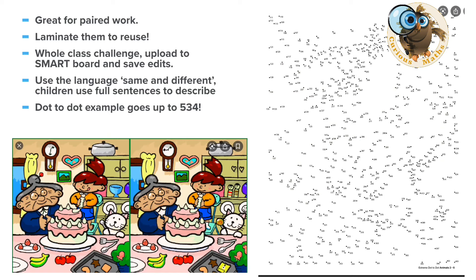Number eighteen: dot to dots and spot the mistake. I love maths puzzles — they're great for paired work, and if you laminate them they can be reused. I often use them for whole-class challenges, uploading to the smart board and saving edits as we go along throughout the week. There's so much mathematical discussion with 'same and different,' 'spot the mistake,' spatial language like above, behind, and next to, and dot-to-dots for counting and ordering. This example goes right up to 534, so you could do a little bit every day.